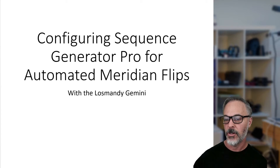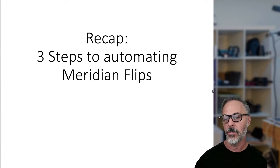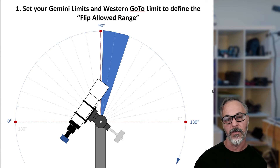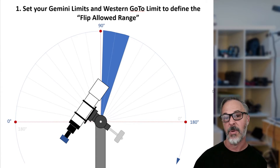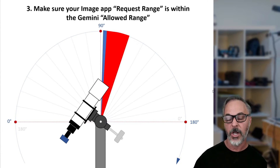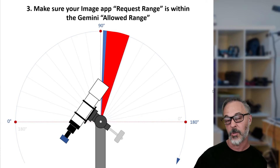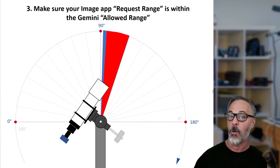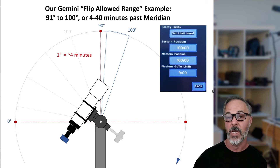We're going to start with a recap of the three steps to automating meridian flips. As we talked about last time, the three important things were: first, set your Gemini limits — those are your safety limits for east and west and your western go-to limit, which defines a flip allowed range. Then we use our imaging application, in this case Sequence Generator Pro, to define a meridian flip request range. The critical part is making sure that when SGPro makes a request, it falls within the Gemini allowable range.